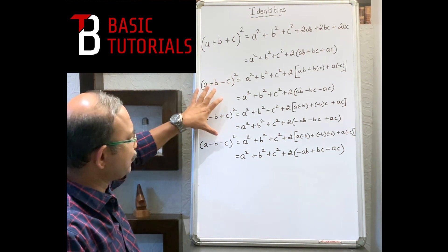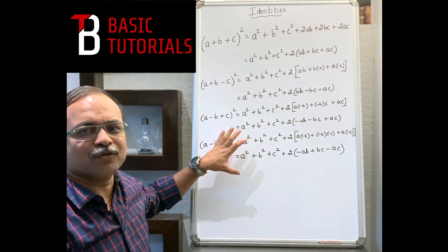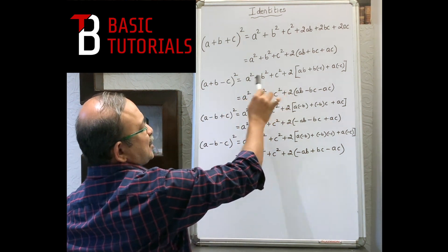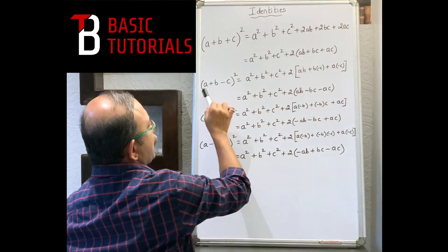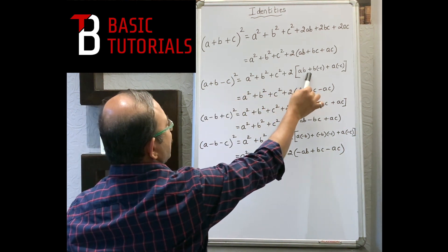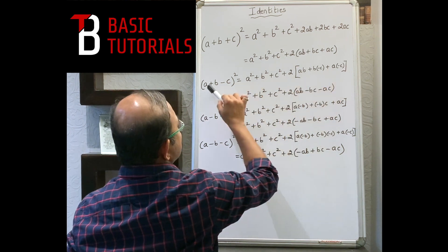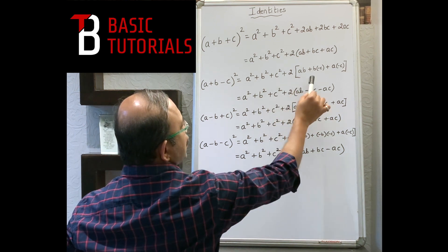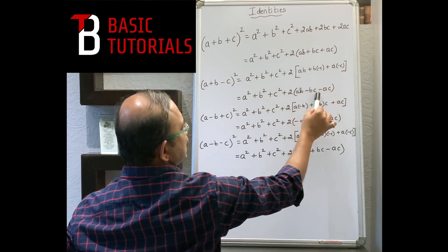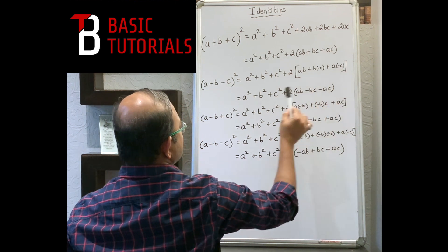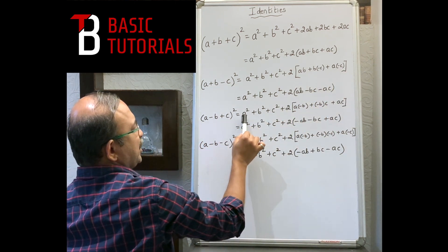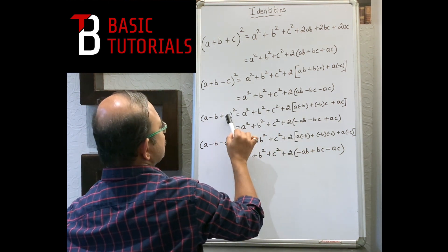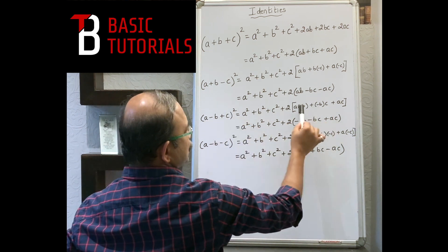In some books different formulae are given for sign variations; you don't need to learn all of them. For (a+b-c)²: a² + b² + c² + 2(ab - bc - ac). For (a-b+c)²: a² + b² + c² + 2(-ab - bc + ac).